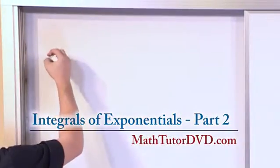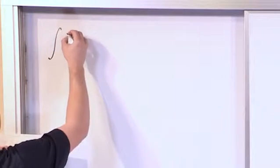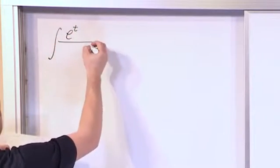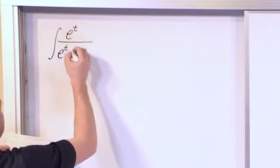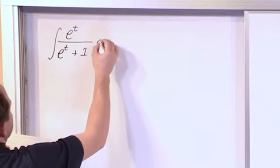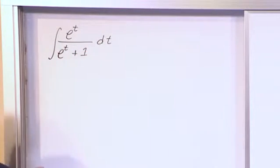So let's say what if you had an integral that was the integral of e to the t on the top and on the bottom we had e to the t plus 1 dt. How would you handle this integral?